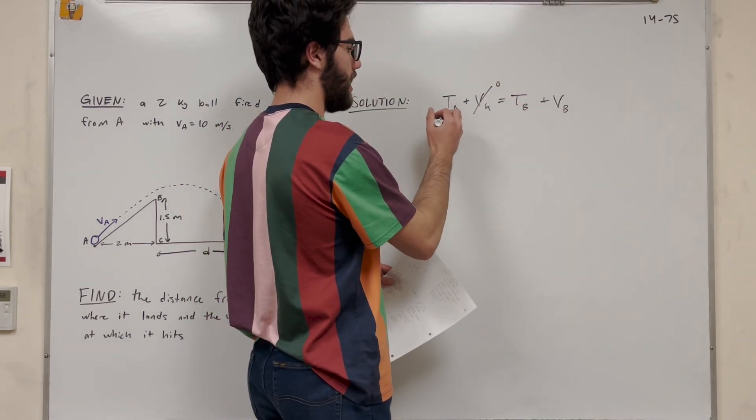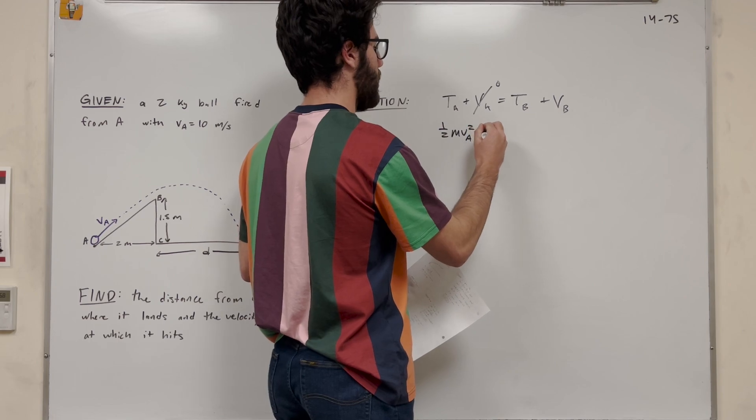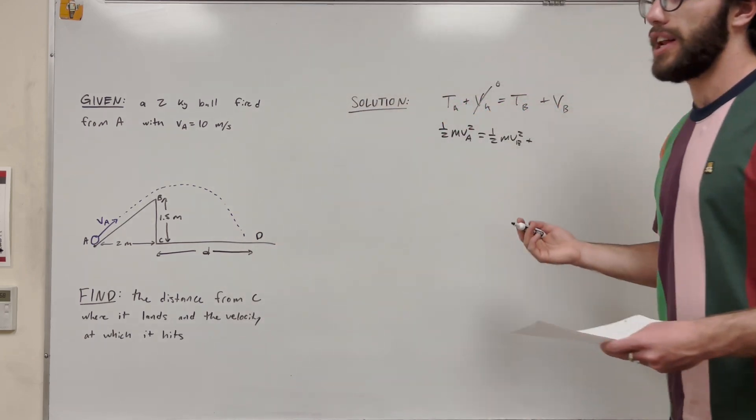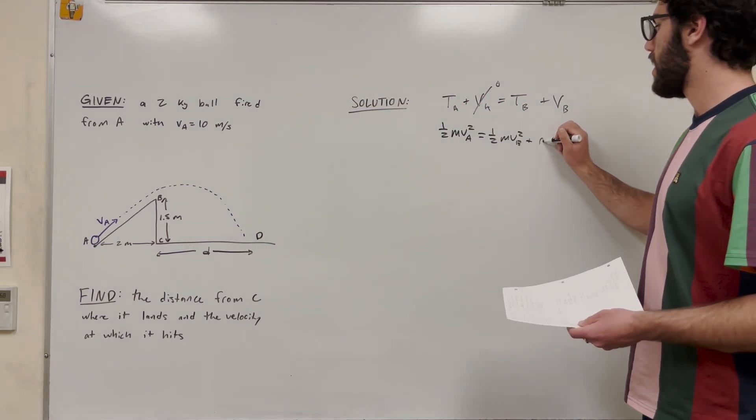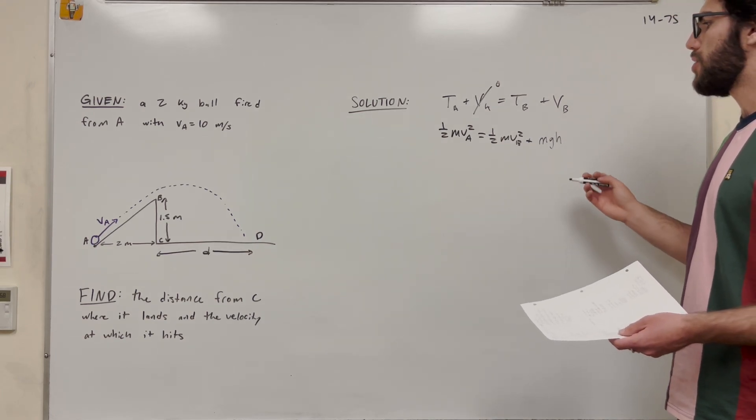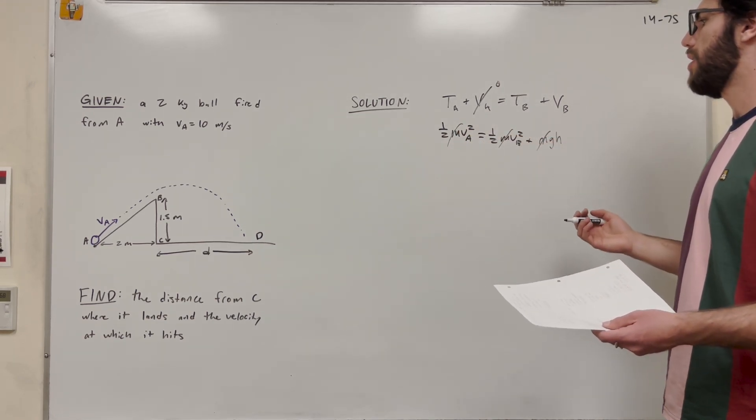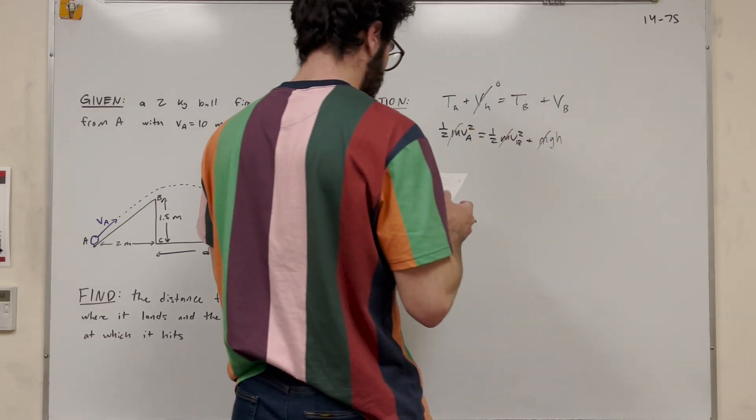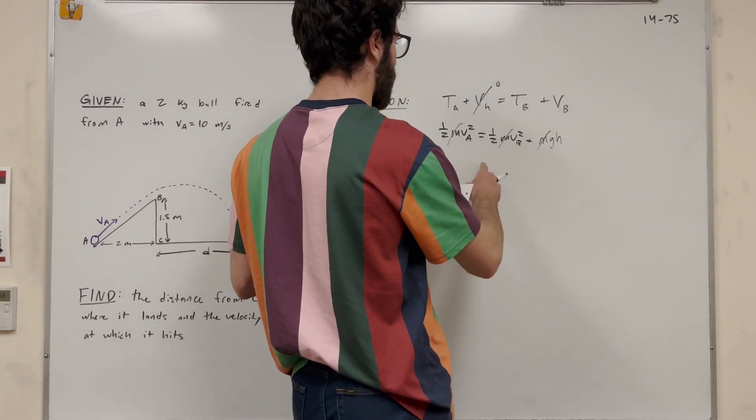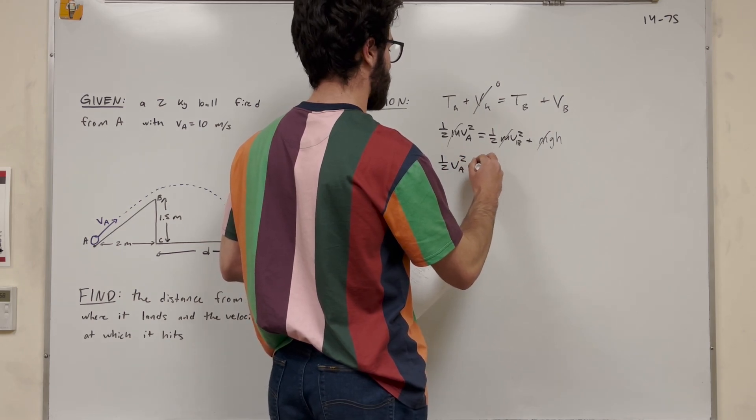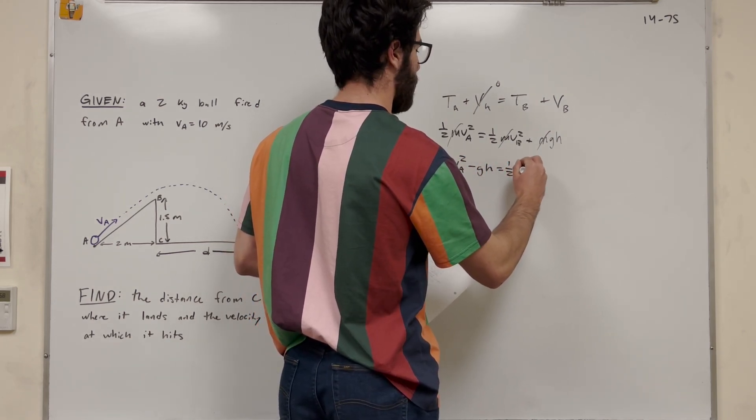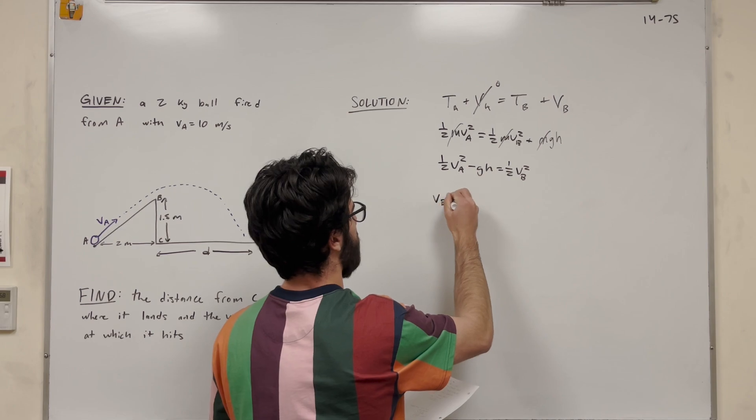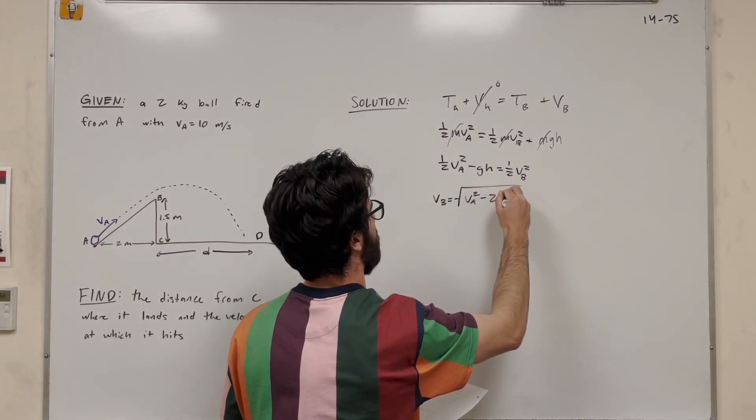So in expanding this equation, kinetic energy is 1 half mass velocity of A squared is equal to 1 half mass velocity of B squared, plus the B potential energy, which is mass times gravity times height. So then we can cancel out the masses because they're in each one. And what are we solving for? We're solving for velocity of B. We want to see how fast we're moving at B. So let's rearrange this equation. First of all, we can move this over to get 1 half velocity of A squared minus gravity height is equal to 1 half velocity of B squared. Then all we have to do is take the square root and multiply by 2. So we get that velocity of B is equal to the square root of velocity of A squared minus 2 gravity height.